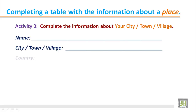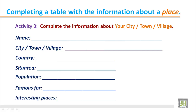Activity 3: Complete the information about your city, town, or village using the same table. We are doing this activity to improve our writing skill, so we have to write a model paragraph about a place. First, we complete the information about the place — it may be your city, town, or village.